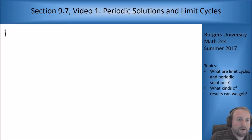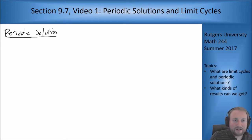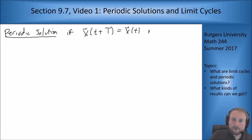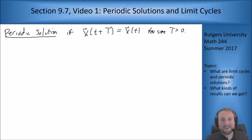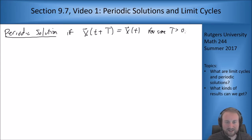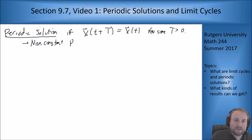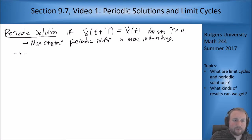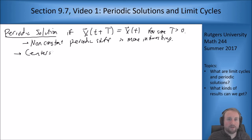So first of all, what do we mean by a periodic solution? We say something is periodic if x(t + T) equals x(t) for some capital T positive. Obviously constant solutions are periodic — they always satisfy this because they don't move at all. But ideally we're looking for non-constant periodic solutions, which are more interesting. The main example we have so far are centers. A linear system with a center gives periodic solutions that go around and around. We also saw this from predator-prey models as well.